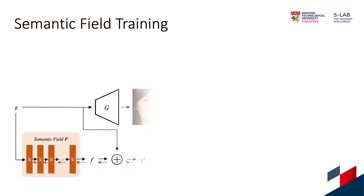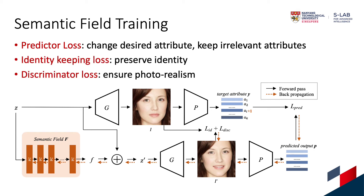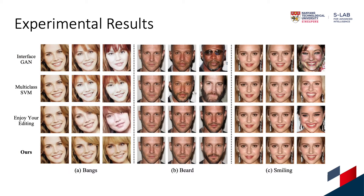We train the semantic field using predictor loss, identity-keeping loss, and discriminator loss to ensure the location-specific property of the semantic field. We compare our approach against InterFaceGAN, multi-class SVM, and Enjoy Your Editing. Our editing results are more realistic, and our method is less likely to change the identity or other irrelevant attributes.